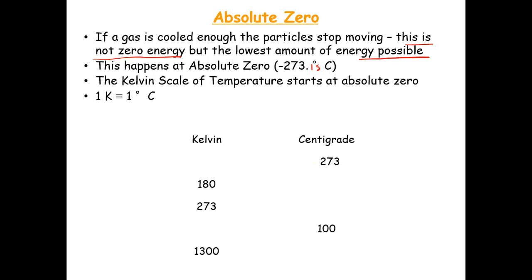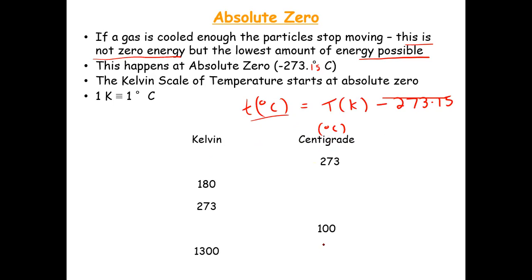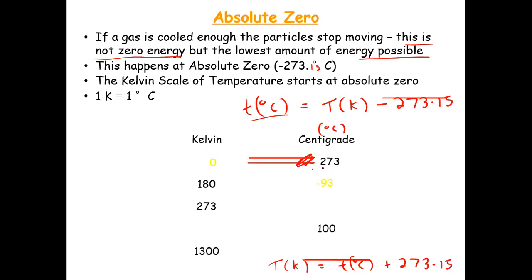The rule for converting between the two scales: the temperature in degrees Celsius equals the temperature in Kelvin minus 273.15. If you know the temperature in degrees Celsius and want to find Kelvin, rearrange to get: temperature in Kelvin equals temperature in degrees Celsius plus 273.15.